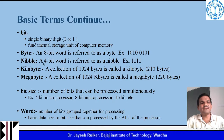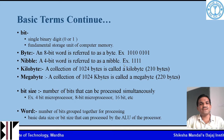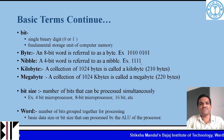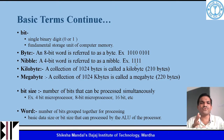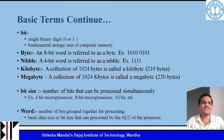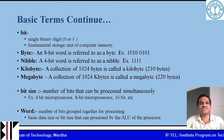Nibble is nothing but a 4-bit word. For example, 1111 — these 4 bits grouped together are called a nibble. A byte can consist of two nibbles: the first nibble and the second nibble.